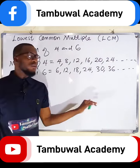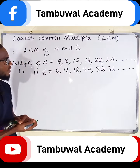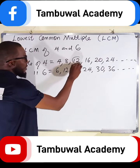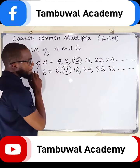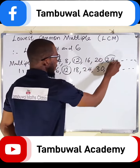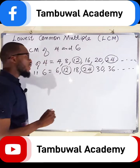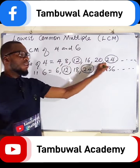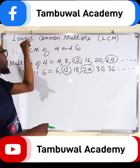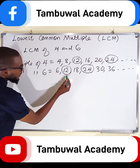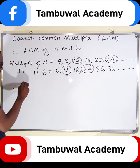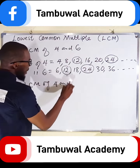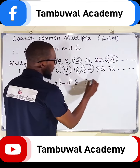So these are some of the multiples of four and six. Now we want to choose the common ones. From here you can see twelve appears in both lists, and twenty-four equally appears in both. Therefore the common multiples between four and six are twelve and twenty-four. But we are interested in the lowest, and the lowest here is twelve. Therefore the LCM of four and six is twelve.